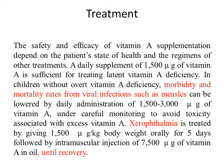In children without overt vitamin A deficiency, morbidity and mortality rates from viral infections such as measles can be lowered by daily administration of 100,500 to 3000 microgram of vitamin A under careful monitoring to avoid toxicity associated with excess vitamin A. Xerophthalmia is treated by giving 1,500 microgram per kg body weight orally for 5 days followed by intramuscular injection of 7,500 microgram of vitamin A in oil until recovery.